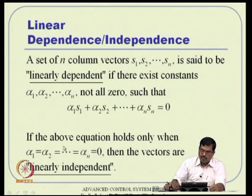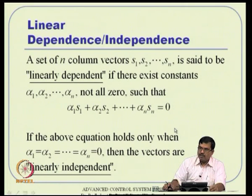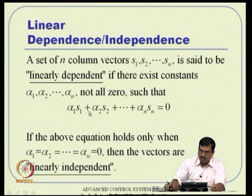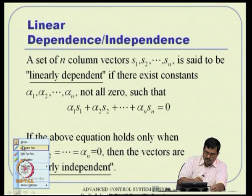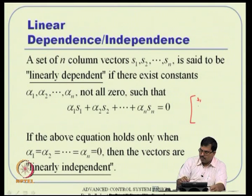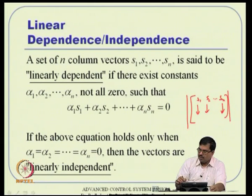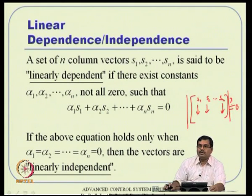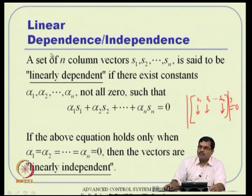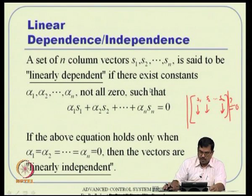How do you quickly determine linear independence? This is a vector equation, so the zero on the right is actually a zero vector. If we formulate the matrix by placing S1, S2 up to Sn as columns, this matrix must be non-singular for a non-trivial solution to exist. We check whether the determinant is zero or not. If the determinant is non-zero, a non-trivial solution exists and the vectors are linearly dependent.